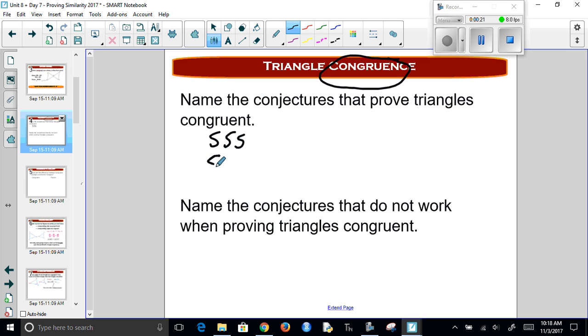We had SSS, SAS, we had angle-side-angle, we had side-angle-angle. Those ones all worked. We also have hypotenuse-leg. Now, the conjectures that didn't work were SSA and angle-angle-angle. This is when we wanted to prove that one triangle was exactly the same as the other one.